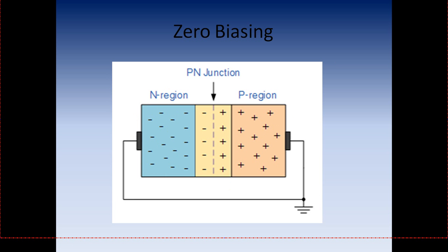When the P-type and N-type semiconducting materials are joined together, a diode is formed at that region. There are excess electrons in the N region, and there are holes seeking electrons. The electrons from the N region travel to the holes in the P region. The N-type region becomes positively charged as it loses electrons, and the P-type becomes negatively charged as it gains electrons. A depletion layer is created.